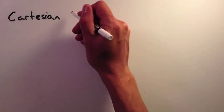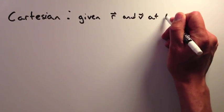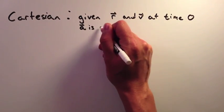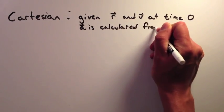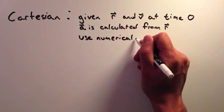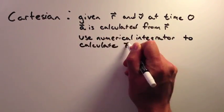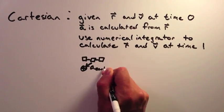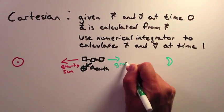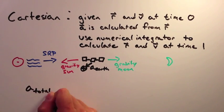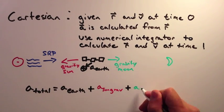However, the Cartesian elements are very useful when propagating the orbit. By using small step sizes, you can use a numerical integrator to determine the new position and velocity of the satellite given the current position, velocity, and acceleration. With this method, you can also add in accelerations from other forces such as gravitational effects from the sun and moon and solar radiation pressure.